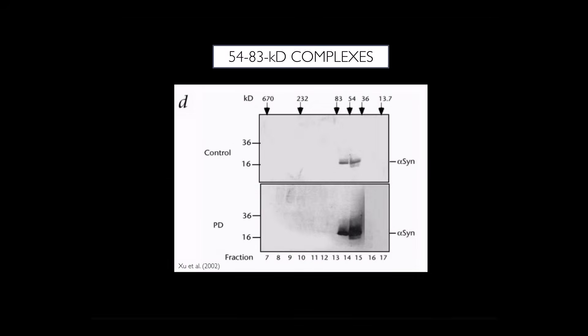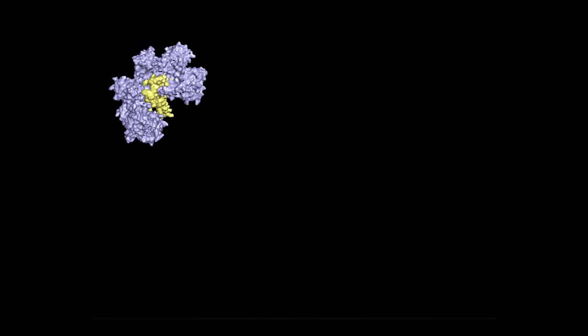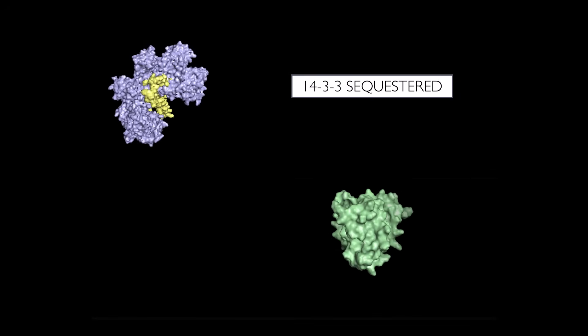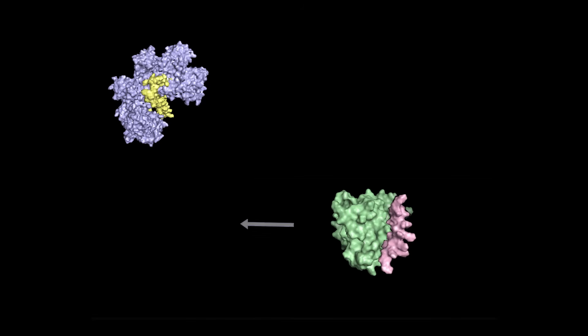The contribution of alpha-synuclein to the mechanism involves its complexation with 14-3-3. A study at Harvard Medical School found that alpha-synuclein interacts with 14-3-3 to form 54 to 83 kilodalton complexes. Once complexed, 14-3-3 is unable to bind BAD. Sequestration by alpha-synuclein reduces the availability of 14-3-3, thus increasing inhibition of BCL-2 by BAD and promoting apoptosis.